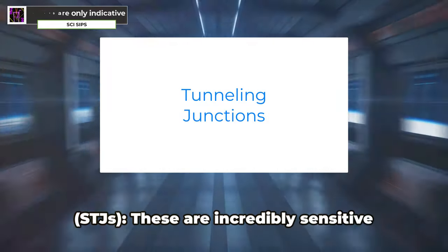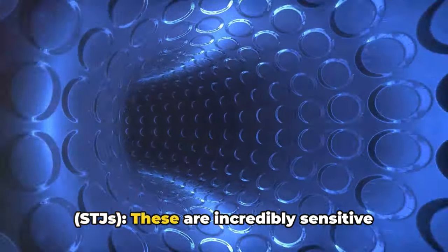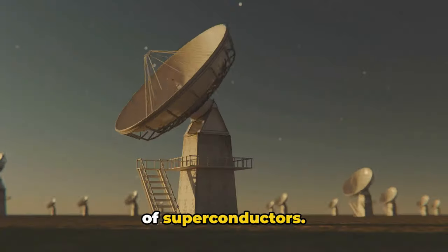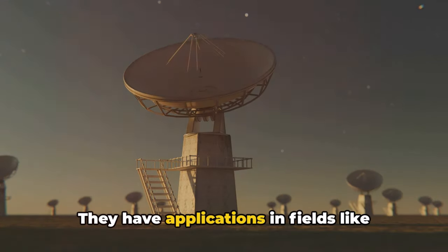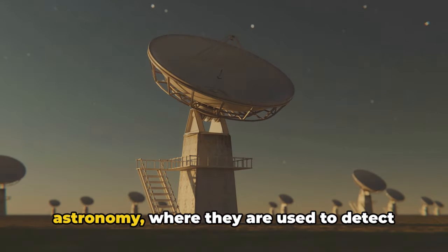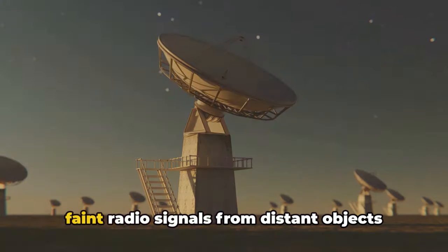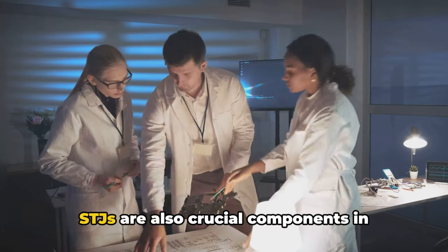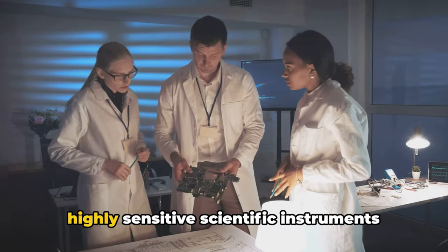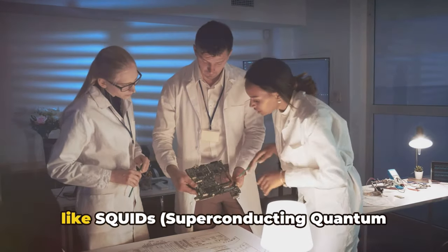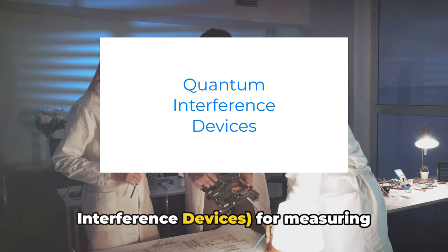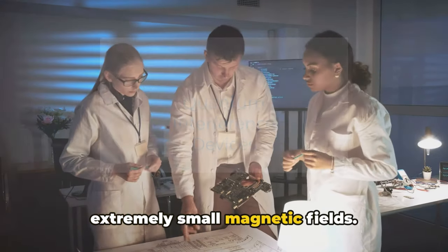Superconducting tunneling junctions, STJs: These are incredibly sensitive devices that exploit the unique properties of superconductors. They have applications in fields like astronomy, where they are used to detect faint radio signals from distant objects in the universe. STJs are also crucial components in highly sensitive scientific instruments like SQUIDs, superconducting quantum interference devices, for measuring extremely small magnetic fields.